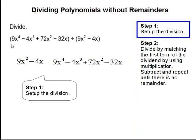So we have this polynomial divided by this polynomial, so we can set up the division as we normally do with regular numbers. So it'll be 9x² - 4x going into this longer polynomial.